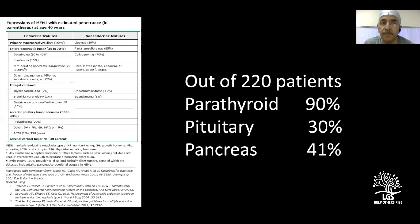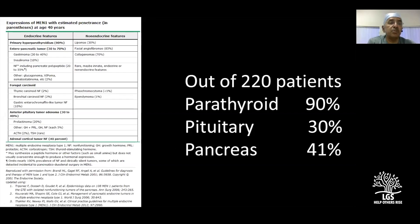Regarding MEN1, from one of the largest series of 220 patients, parathyroid tumors occur in approximately 90 percent of cases, pancreatic NETs in 41 percent, and pituitary tumors in 30 percent. That is a rough ballpark figure of what to expect in patients with MEN1.